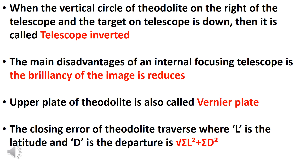The main disadvantage of an internal focusing telescope is that the double lens reduces the brightness of the image. The upper plate of the theodolite is also called the Vernier plate.